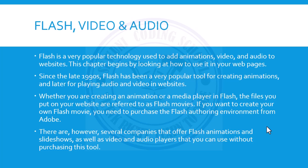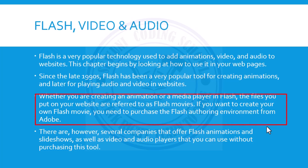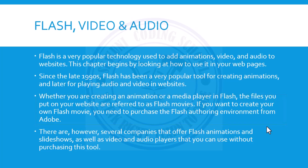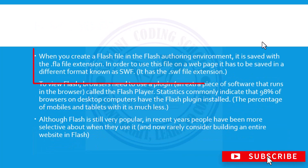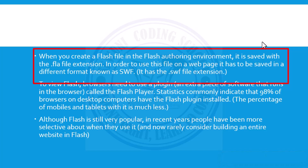When you are creating an animation or trying to play video or audio, the files you put on your website are referred to as flash movies. If you want to create your own flash movie, you need to purchase a flash authoring environment from Adobe — it is an Adobe product and it's not free. When you create a flash file in that authoring environment, it will be saved with an extension of .fle.